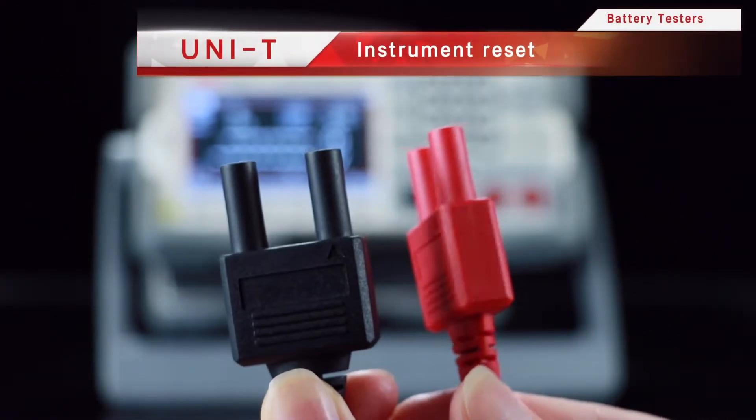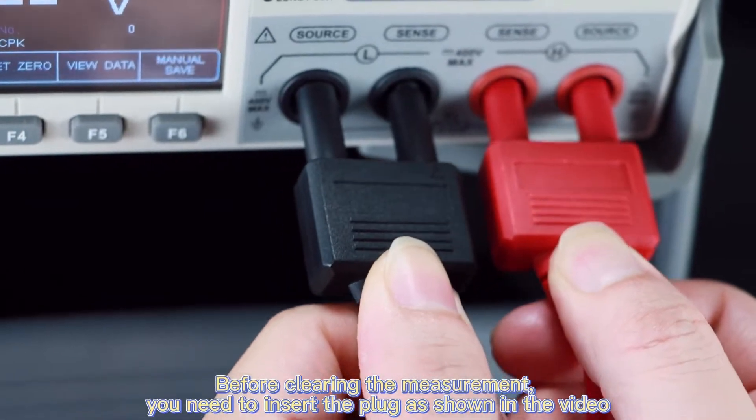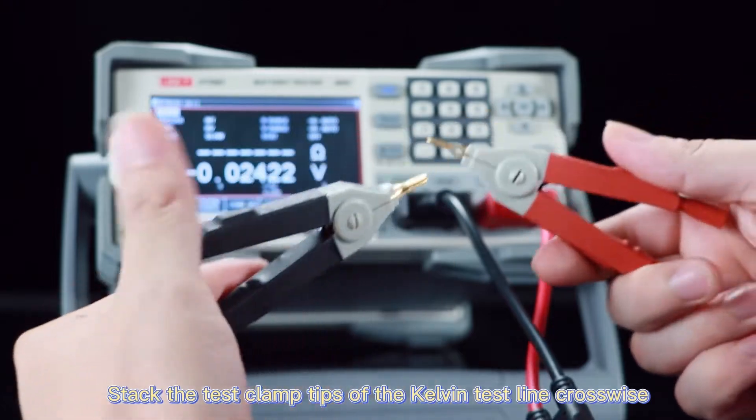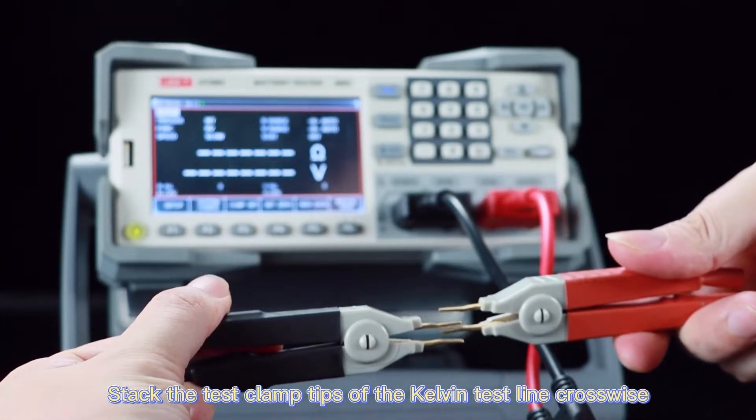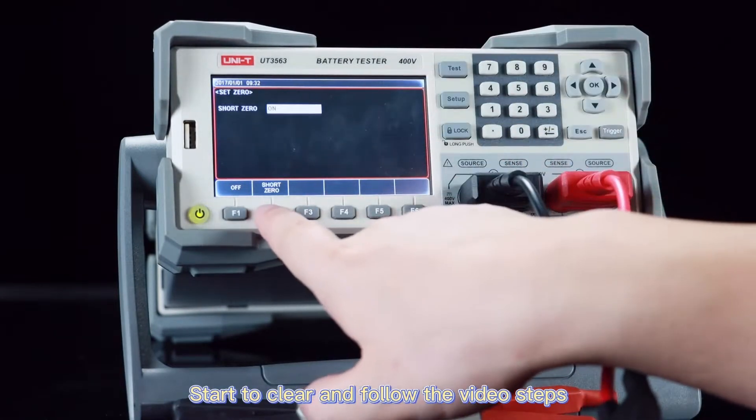Instrument reset. Before clearing the measurement, you need to insert the plug as shown in the video. Stack the test clamp tips of the Kelvin test line crosswise. Start to clear and follow the video steps.